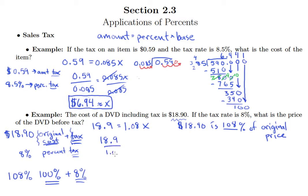So we just need to divide both sides by 1.08. Over here we have 18.9 divided by 1.08, and again I'm going to have to move my decimal point over in both of these numbers two places, which means I got to add a zero here.